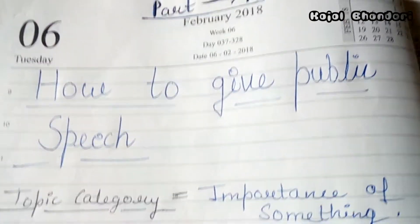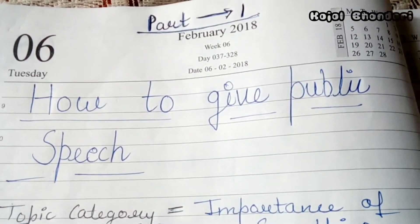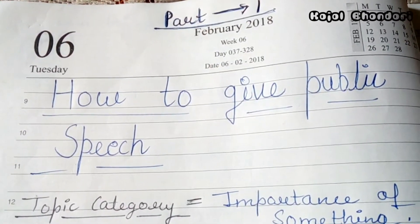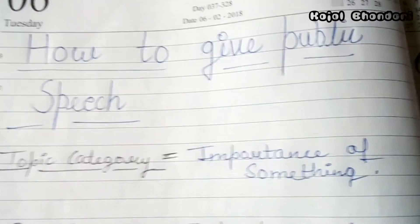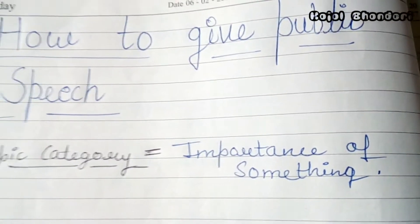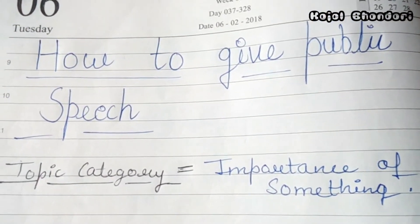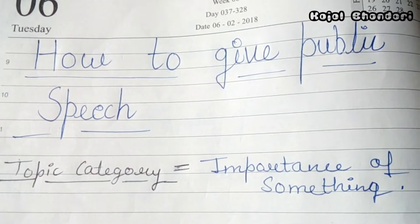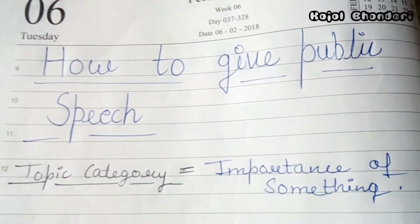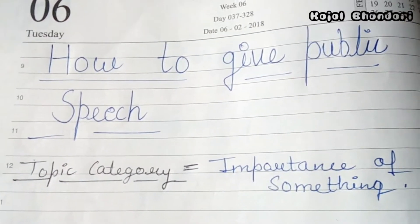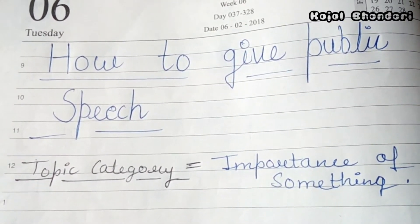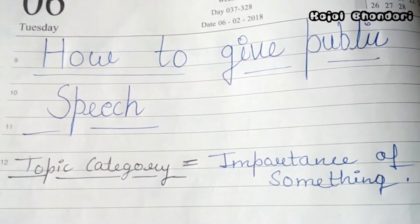This video is about how to give a public speech. How to give a speech — but in this video I will tell you how to give the importance of something: importance of newspaper, importance of computer, importance of social media, importance of mobile — importance of anything. This video covers the topic category of 'importance of something'.